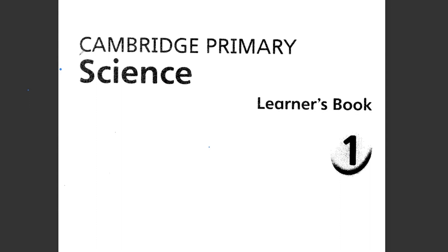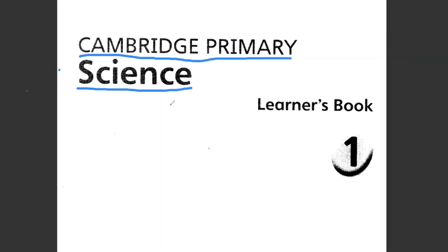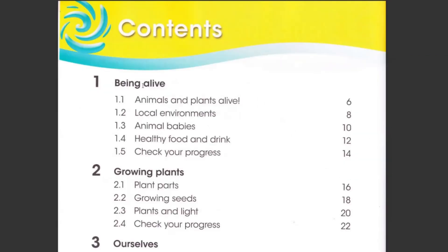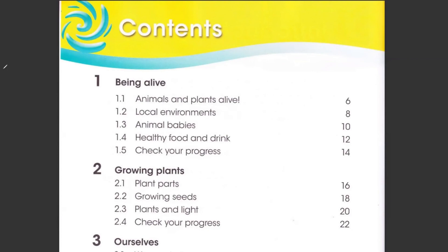Cambridge Primary Sciences — in this book we will study about science. This is the Learner's Book, not the Activity Book, and this is for Grade One. So students, here we have the Contents. Contents are the units and chapters that we are going to read and learn in this book. Our first chapter is very interesting — it's called 'Being Alive'.